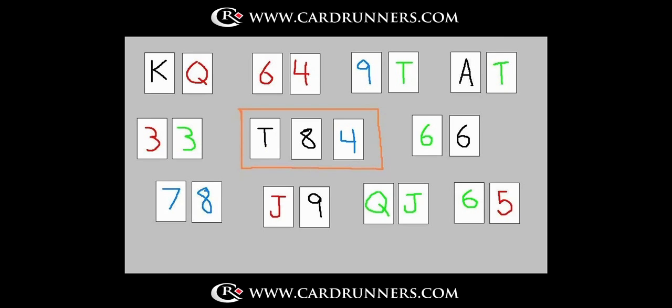Now let's look at one of the simpler examples of these middle-ish connected card flops, 10-8-4 two-tone. As we see on this board, virtually nothing folds. King-queen is still over cards. 6-4 suited has bottom pair. 9-10 offsuit has top pair. Ace-10 offsuit has top pair. Pocket sixes has something better than bottom pair. 7-8 suited has middle pair. Jack-9 offsuit is an open-ended straight draw. Queen-jack suited is two over cards and a gutshot. And 5-6 offsuit is a gutshot. It's even possible that pocket threes could have called on this board because his opponent will just put him on Ace-King.